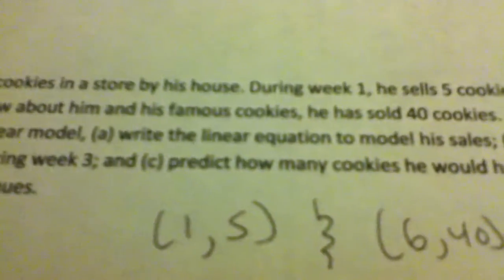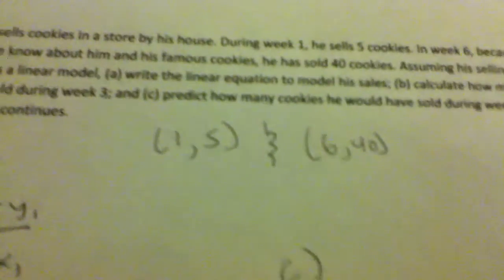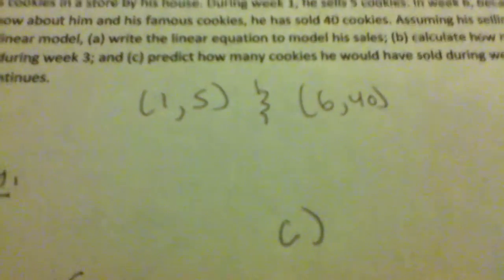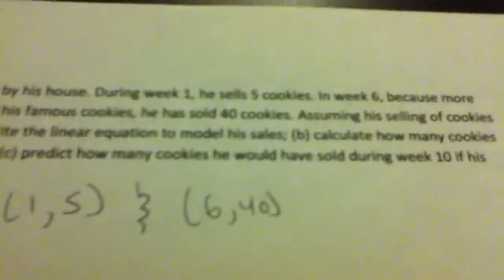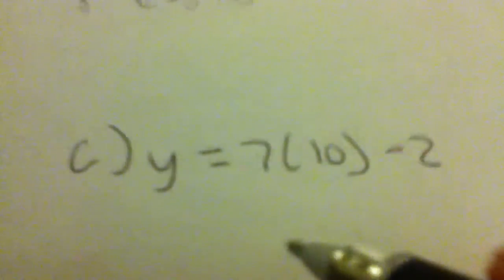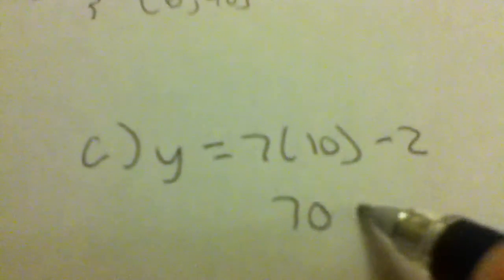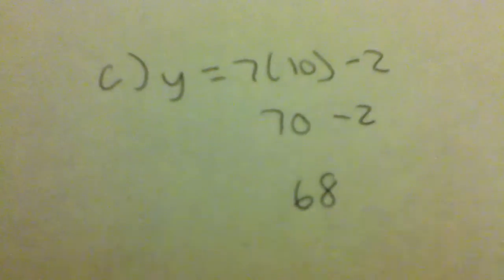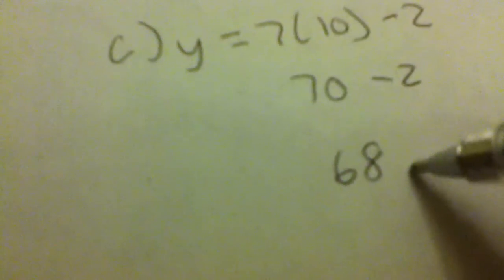And now our last step for this problem, step C. Predict how many cookies he would have sold during week 10 if his pattern continues. Let's do this over here. It's basically what we did before, except now we input 10. So y equals 7 times 10 minus 2. 7 times 10 is 70, minus 2 is 68. And that answers our last question. John sold 68 cookies.